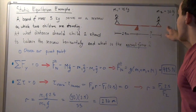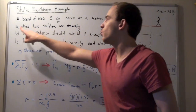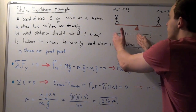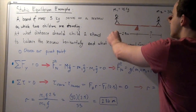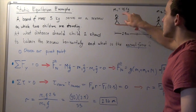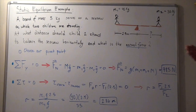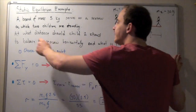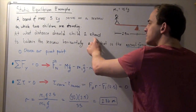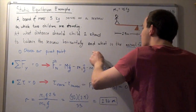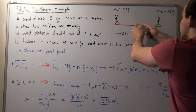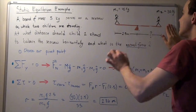Suppose we have a board of mass M that serves as a seesaw on which two children are standing. Child 1 is placed 2.5 meters away from the triangle that's balancing our board, and child 1 has a mass of 40 kilograms. Child 2 has a mass of 35 kilograms and is placed some distance along the other direction. We want to find at what distance child 2 should stand to balance the seesaw horizontally.